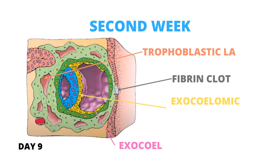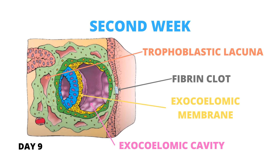By the ninth day of development, the blastocyst is implanted deeper in the maternal endometrium, and as a consequence of its immersion in the surface epithelium, an occlusion by a fibrin clot is generated. In the syncytiotrophoblast, spaces called vacuoles appear, and these vacuoles fuse to form large spaces called trophoblast lacunae. On the inner surface of the cytotrophoblast, a thin membrane known as the exocelomic or Heuser's membrane begins to form. This membrane, together with the hypoblast, generates the lining of the exocelomic cavity, also called the primitive yolk sac.